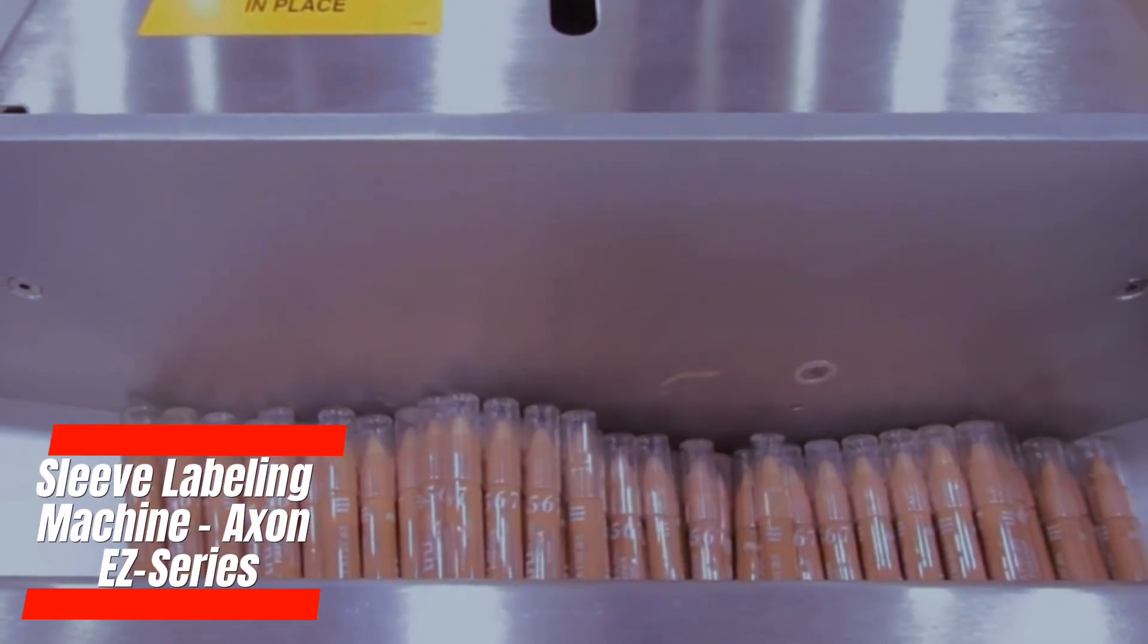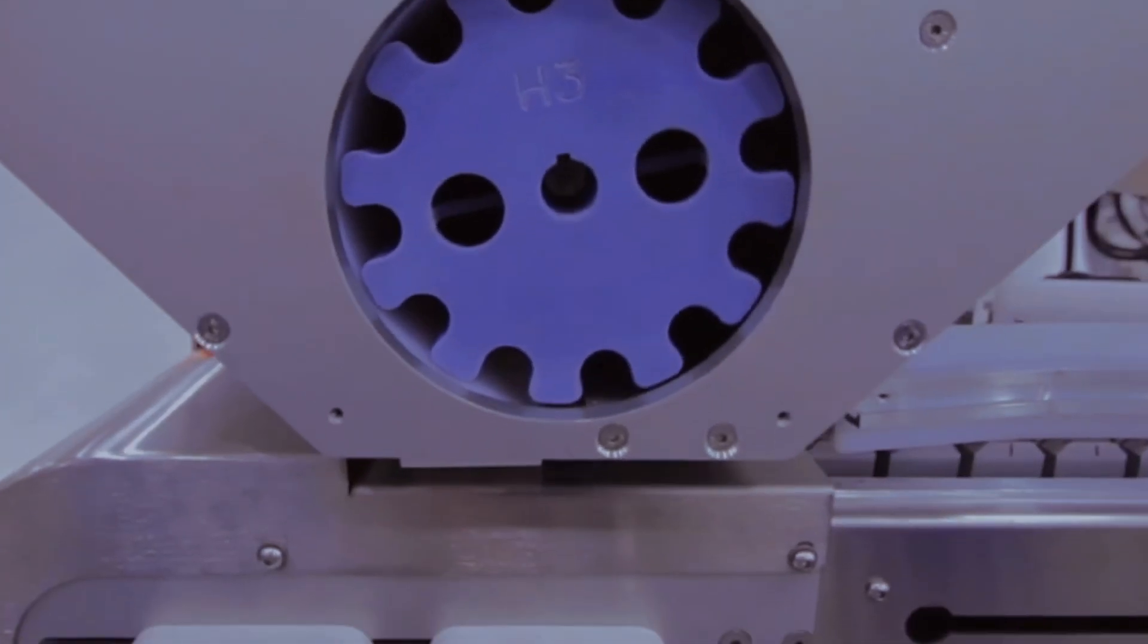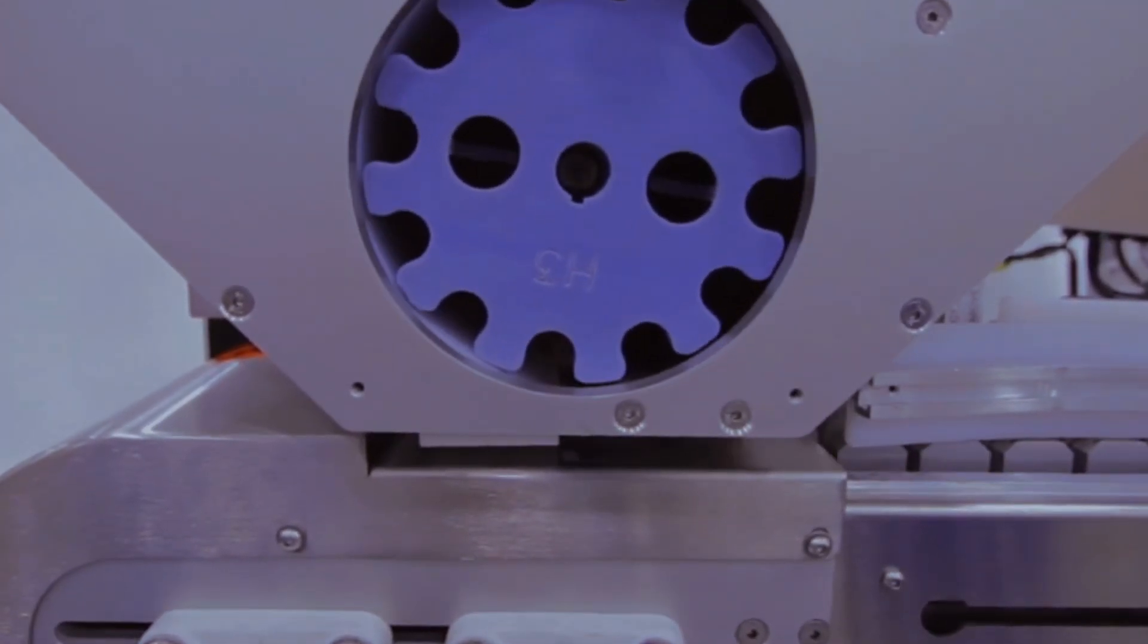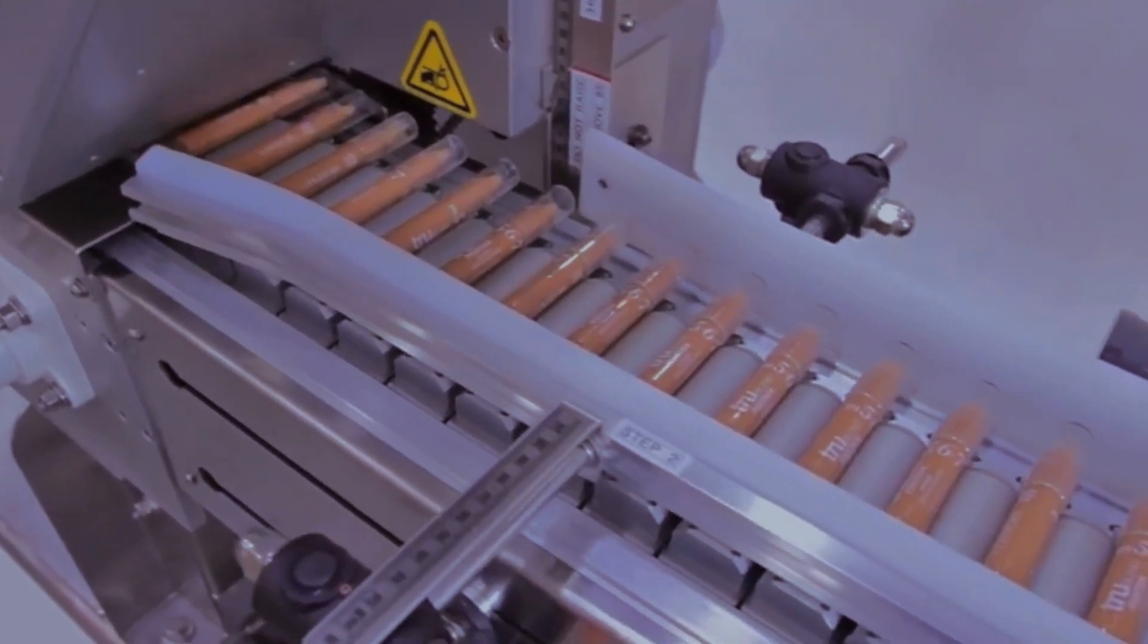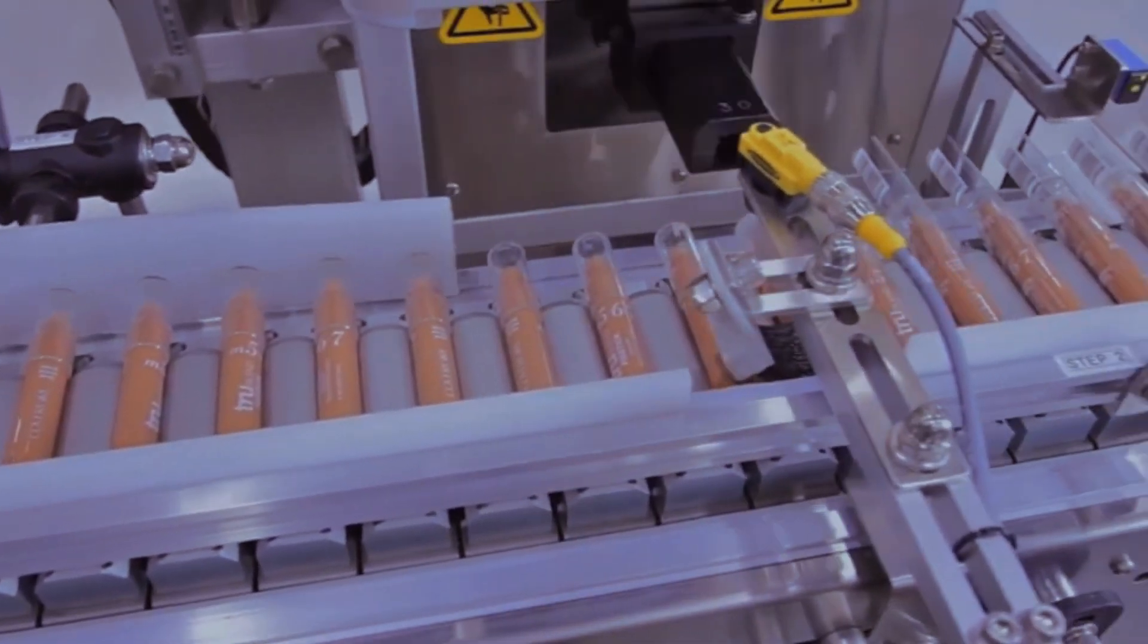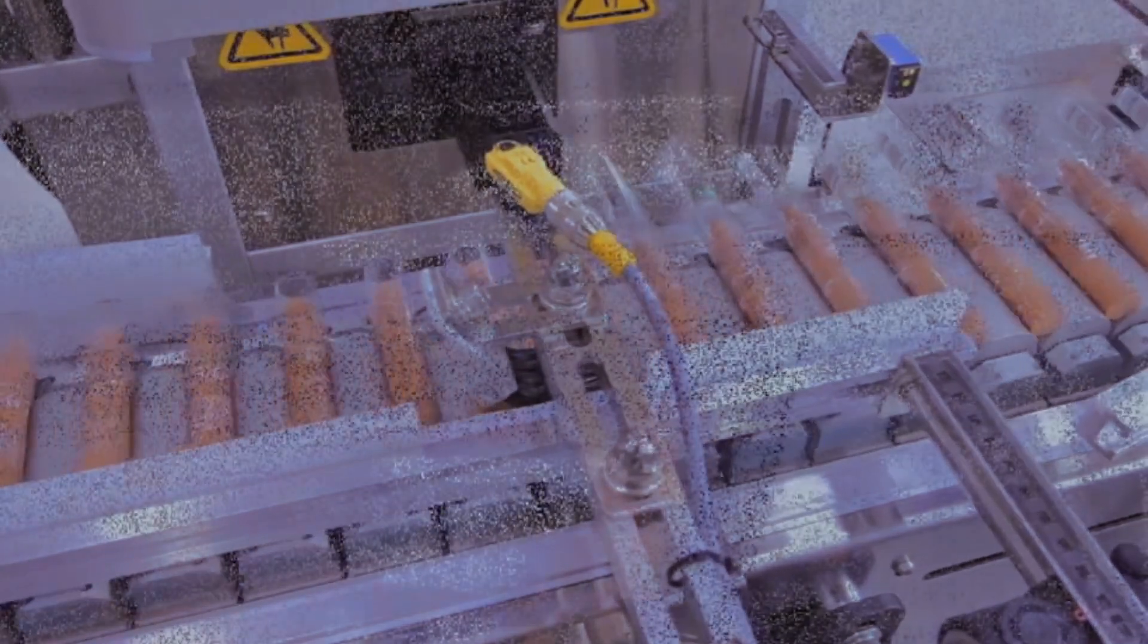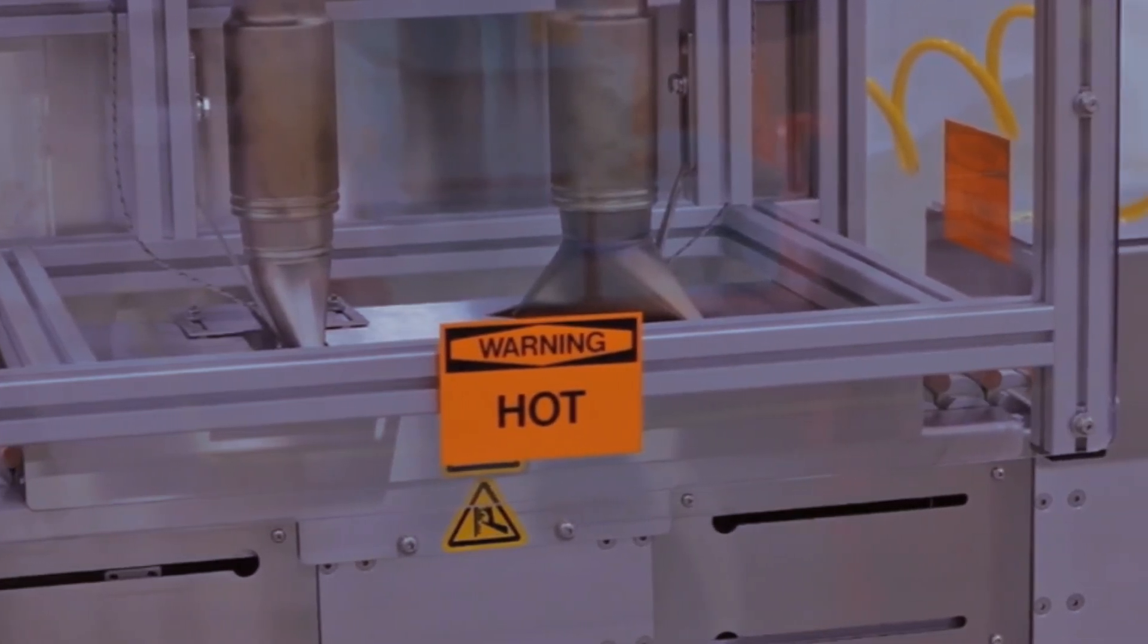The Axon EZ Series is exceptional in applying heat shrink sleeves onto containers with remarkable precision and efficiency. Its modular design not only makes it easy to customize for various container shapes and sizes, catering to a wide range of products like bottles, jars, and cans, but also ensures adaptability to changing market demands. The tamper-evident seals produced by this sleeve labeling machine enhance consumer confidence in product integrity and contribute to meeting regulatory standards for safety.